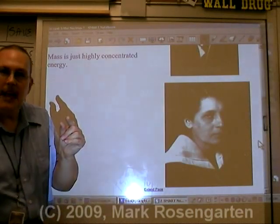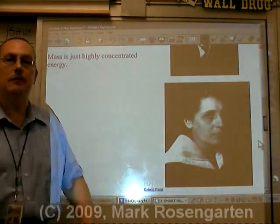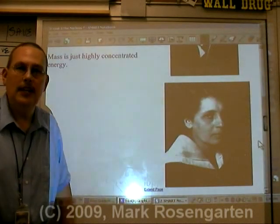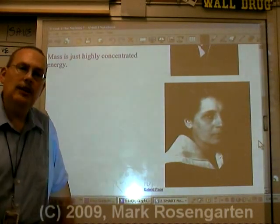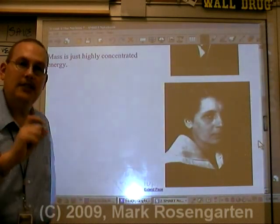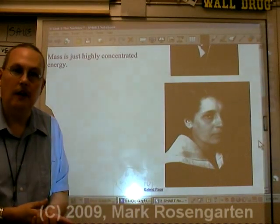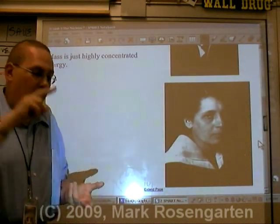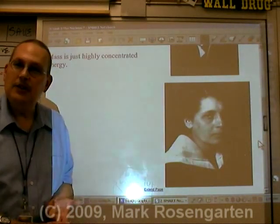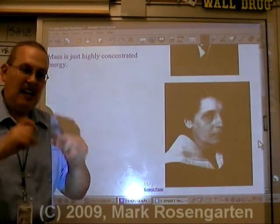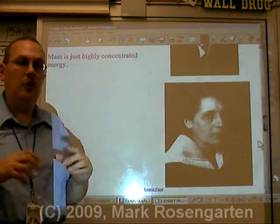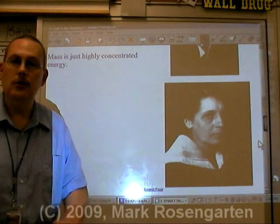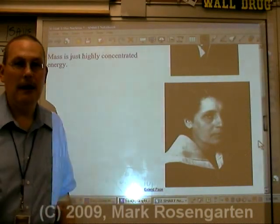It only takes a tiny bit of mass to be converted into a massive amount of energy, and that's what happens in nuclear changes. Nuclear changes, on a very small scale, disobey the law of conservation of mass and energy. Instead of mass being conserved and energy being conserved, a tiny bit of mass is converted into a massive amount of energy — energy that we use in nuclear power plants.